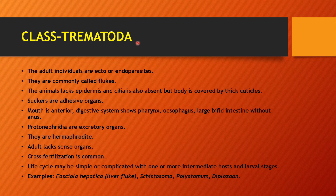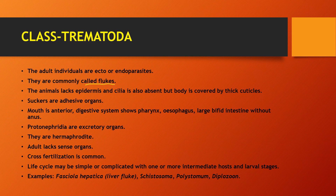Now, about Class Trematoda. Adult individuals are ecto- or endoparasites. Ectoparasites are on the outside of the host body, and endoparasites are inside the host body. They are mostly parasitic and not free-living. We generally call them flukes — the common name for Class Trematoda is flukes. This animal lacks epidermis and cilia is also absent, but the body is covered by thick cuticles.